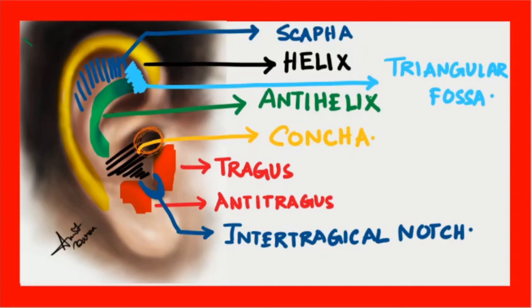Coming downwards, there are two projections known as the tragus and the anti-tragus. Between the tragus and anti-tragus, we have the inter-tragal notch. Just above the inter-tragal notch, we have a flat space which is known as the concha.